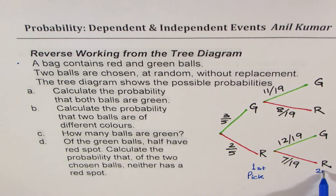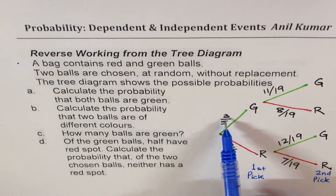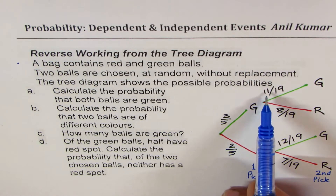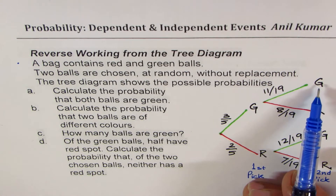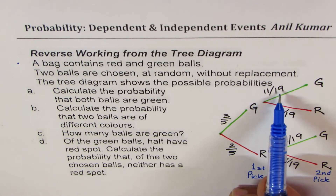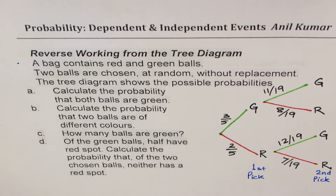Now the second pick. If I have already taken a green ball, then there is one less green ball and the probability of getting the second green is 11 over 19. That is how you can read this tree diagram, and that's the standard way of representing it.